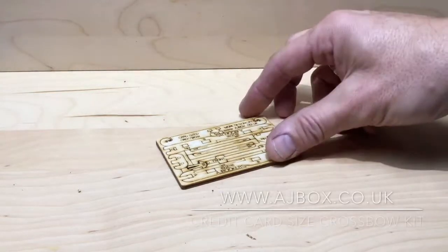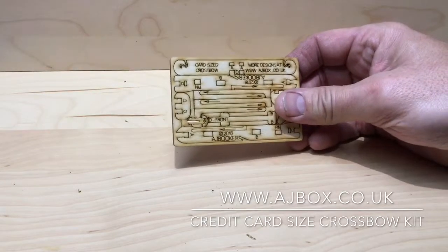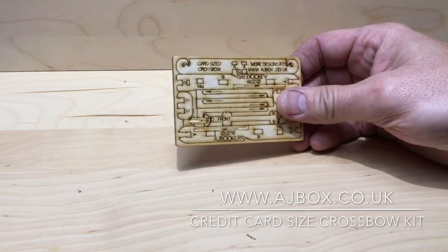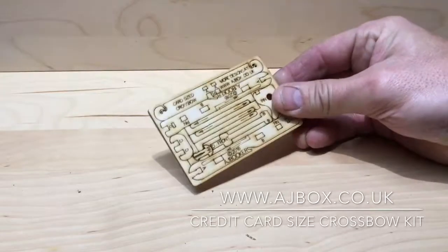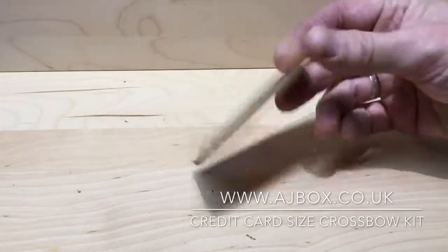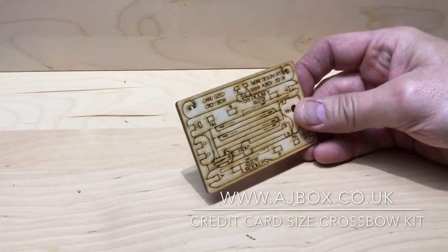Hello, I'm AJ Booker from ajbox.co.uk. I'm a designer and purveyor of my own designs of unique contraptions, ingenious inventions and mechanical marvels, including this, which is a complete credit card sized crossbow kit.